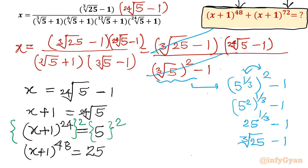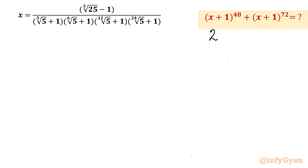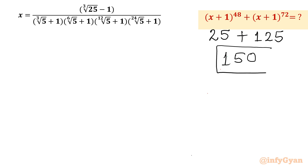For the third value — power 72 — I cube both sides of x plus 1 to the power 24 equals 5. So x plus 1 whole power 72 equals 5 cubed, which is 125. Now the final value: x plus 1 to the 48 is 25, and x plus 1 to the 72 is 125. Adding them gives the answer: 150. This is how we think and simplify. I hope you liked it — do not forget to like, share, and subscribe. Bye-bye till next video. Good luck.